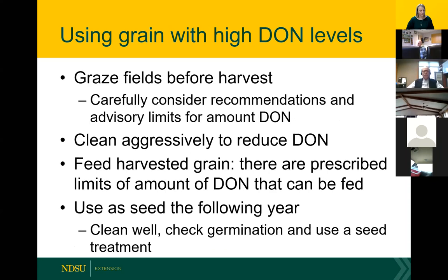Options for using wheat with high DON levels include grazing the field, aggressively cleaning it to reduce DON to a marketable level, feeding the harvested grain with prescribed limits on the amount of DON that can be fed, and using it as seed the following year. If the seed lot is cleaned well and has good germination, there is good data to support that it will function quite well as seed.